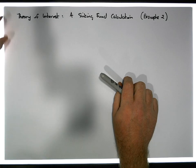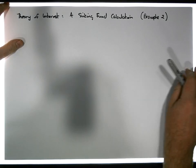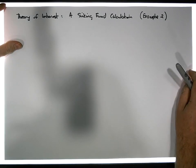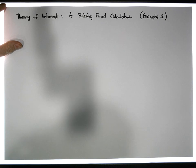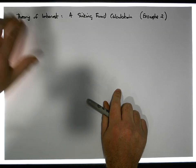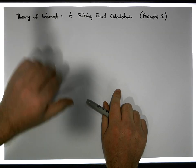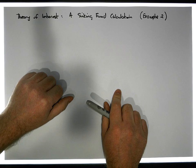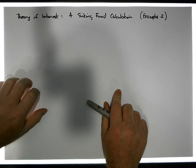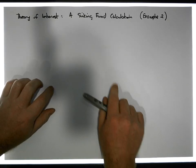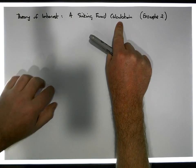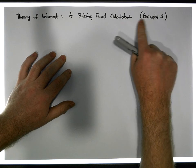Hi guys, this is Jonathan Lambert with the Mathematics Development and Support Service at National College of Ireland. This short video, another in our series dealing with the theory of interest — and more importantly dealing with mortgages, sinking funds and annuities — is going to concentrate on a sinking fund calculation. This is our second example of a sinking fund calculation.